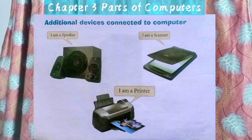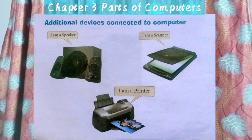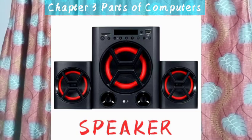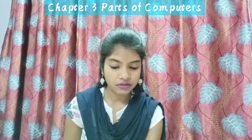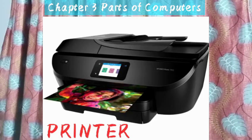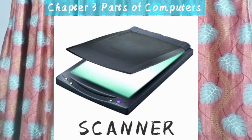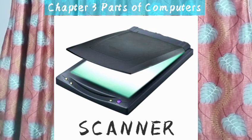Now we will discuss the additional devices that are connected to the computer. The first additional device is the speaker, which is used to listen to songs on the computer. Printer is used to take out the print of images and documents from the computer. Scanner is used to scan documents and images and convert them into digital form — that is, it converts hard copy to soft copy.